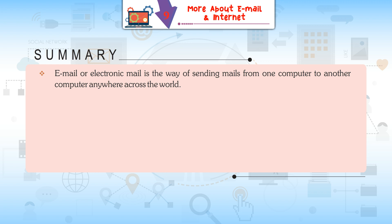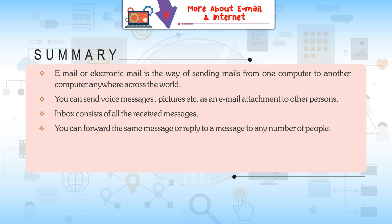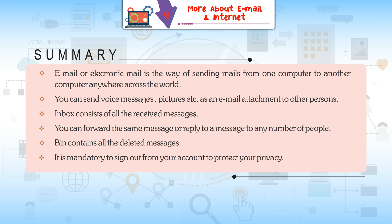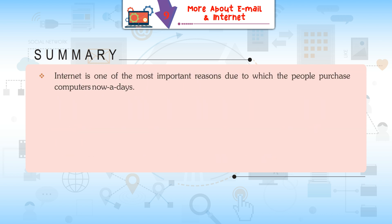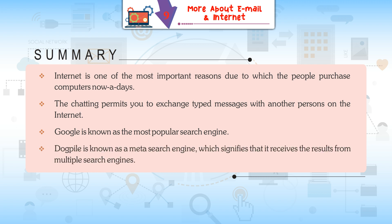Summary: Email, or electronic mail, is the way of sending mails from one computer to another computer anywhere across the world. You can send voice messages, pictures, etc., as email attachments. Inbox consists of all received messages. You can forward or reply to a message to any number of people. Bin contains all deleted messages. It is mandatory to sign out from your account to protect your privacy. Internet is one of the most important reasons people purchase computers nowadays. Chatting permits you to exchange typed messages with another person on the Internet. Google is the most popular search engine; Dogpile is a meta search engine, which means it receives results from multiple search engines.